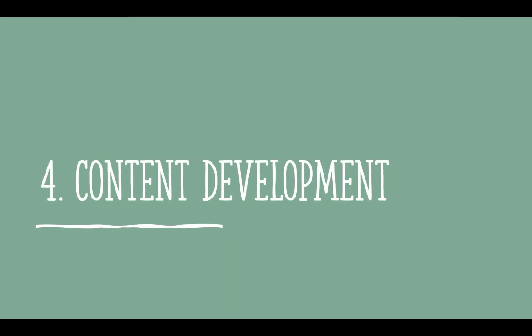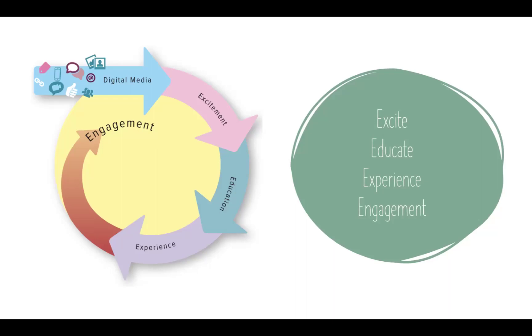Finally, you get to content development. So much goes into the strategy for digital marketing before you actually get to the actual content — what it is going to look like, sound like, and how people are going to view it. When looking at content development, we want to look at four E's: excitement, education, experience, and engagement. These four E's play a big role in how we engage with our target audience.